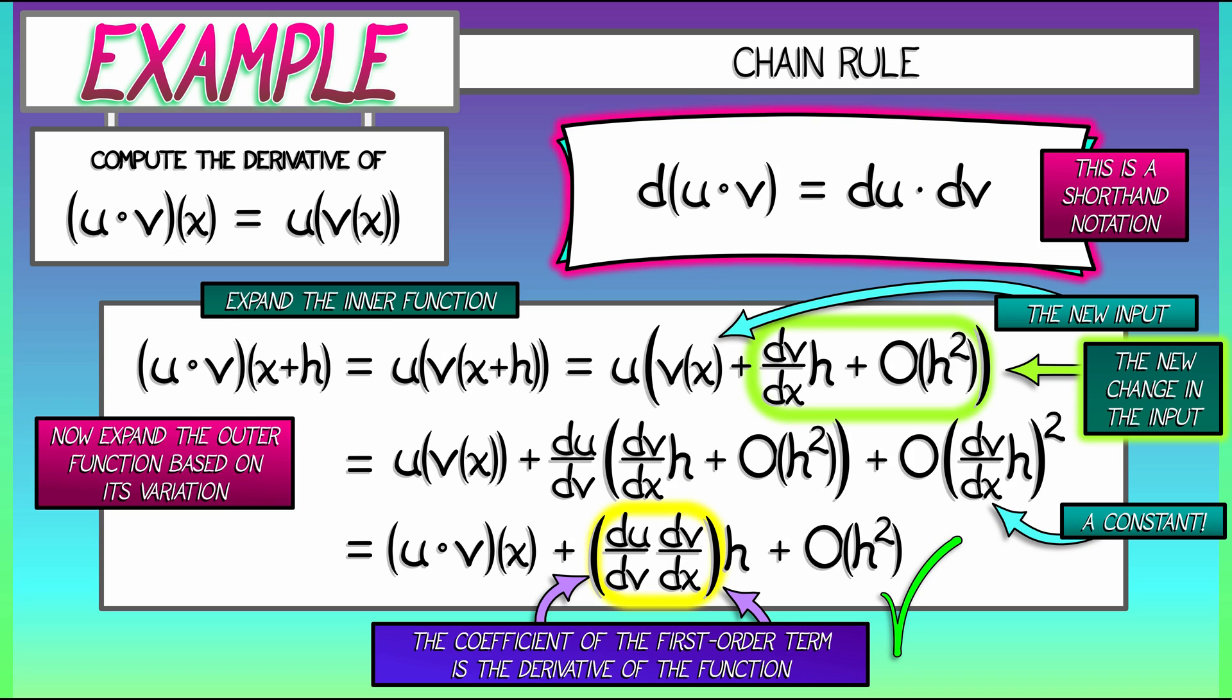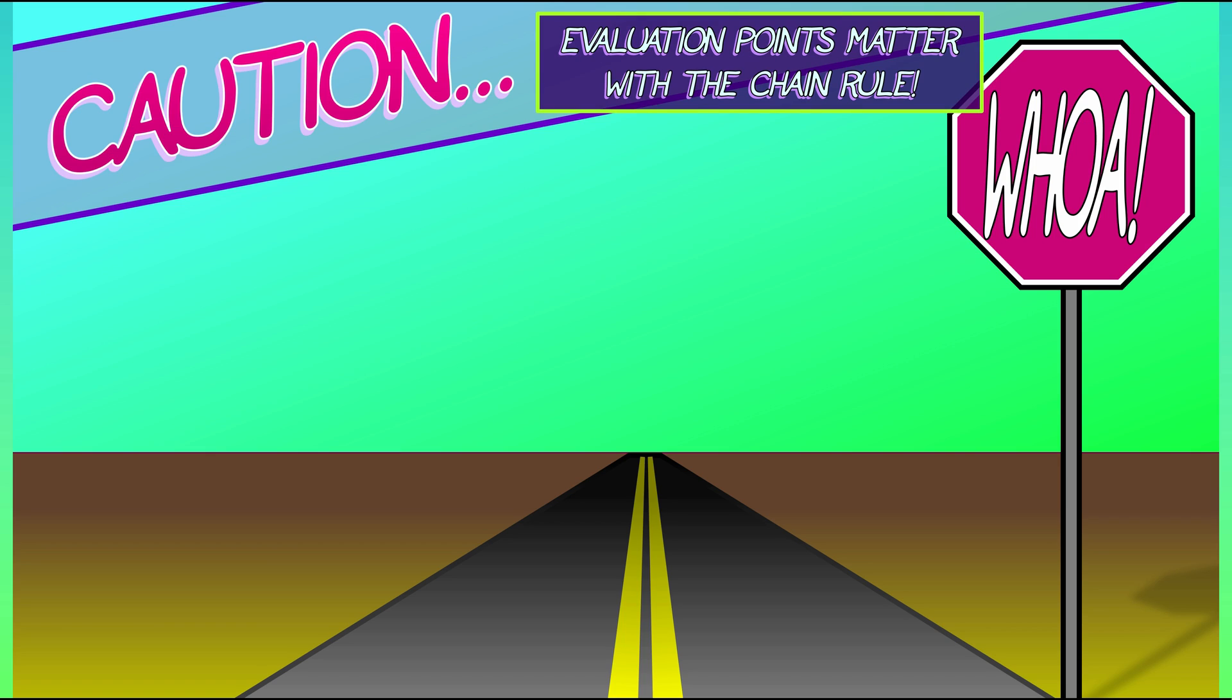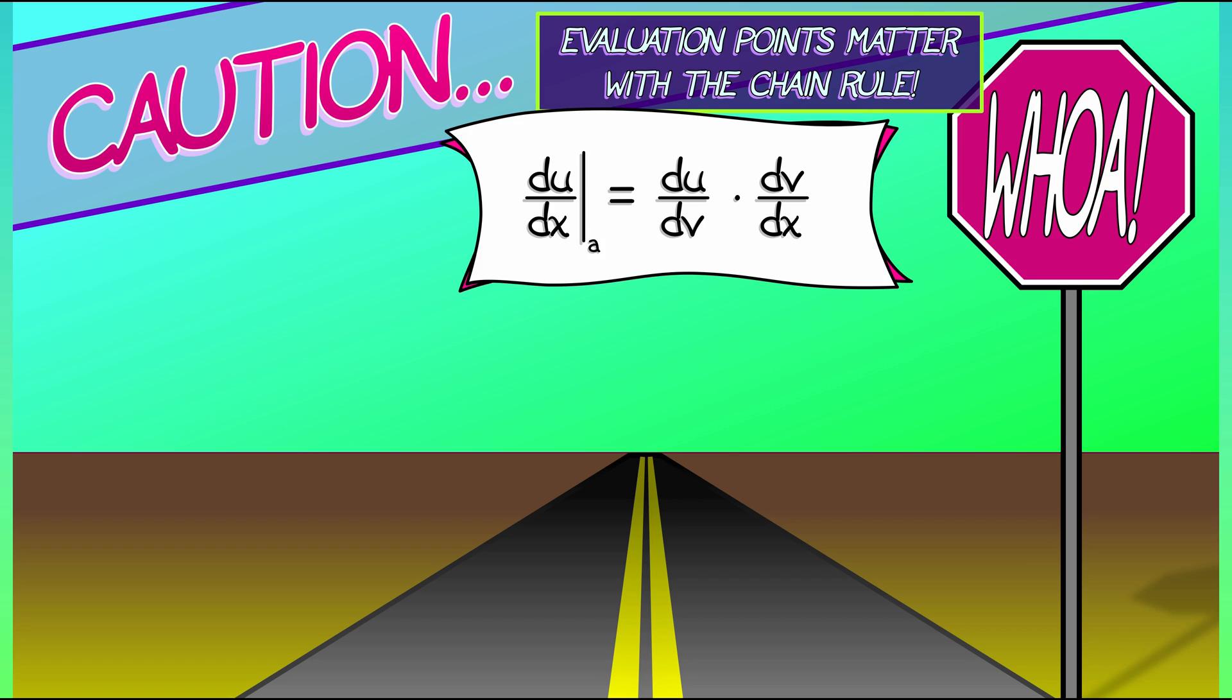Now, as can be seen from a careful viewing of that justification, we have to be careful. The evaluation points really matter when you're working with the chain rule. So we've shown that du/dx equals du/dv times dv/dx. But if we want to evaluate that derivative at a particular input a, then we evaluate dv/dx at a, but we evaluate du/dv at v of a. We have to use the image of that input under the inner function v.